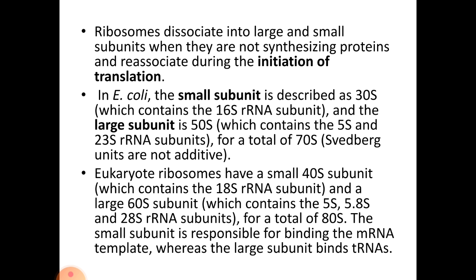Eukaryotic ribosomes have a small 40S subunit consisting of the 18S rRNA subunit, and a large 60S subunit comprising the 5S, 5.8S, and 28S rRNA subunits, together totaling 80S. The small subunit is responsible for binding to the mRNA template, whereas the large subunit binds to the tRNAs.